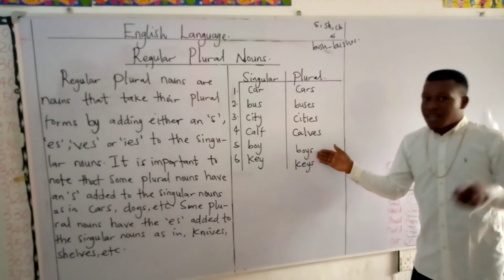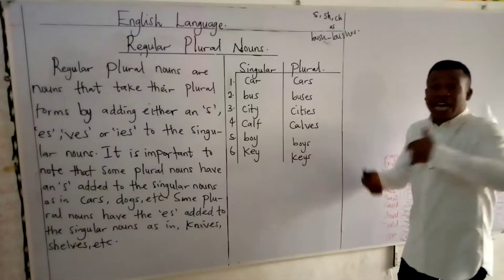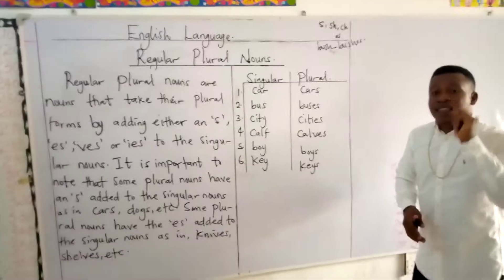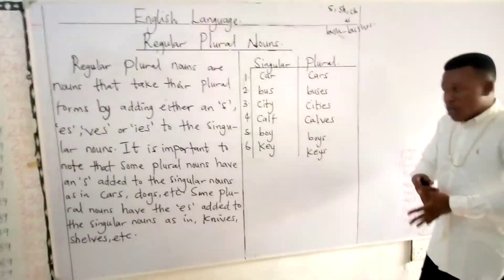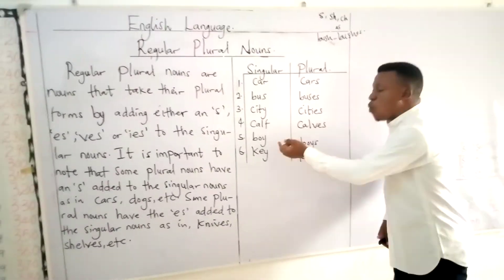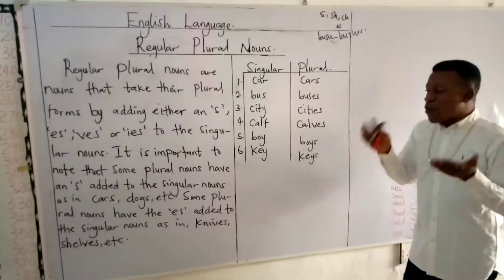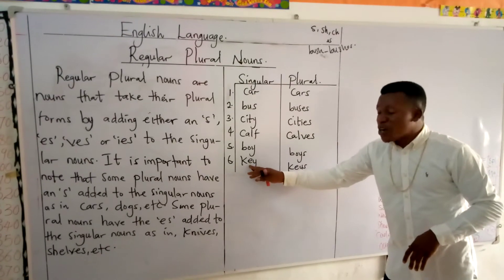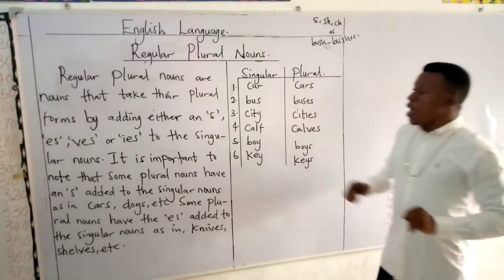For boy, we have boys. Some of you will ask why we just add S. Remember, I said if a consonant letter comes before the Y, you change Y to I and add ES. But for boy, the letter before the Y is a vowel — so there's no need to change Y to I. You just add S to get boys. The same goes for key: key becomes keys, because the E before the Y is a vowel. Once you have a vowel before the Y, you just add S to form the plural.